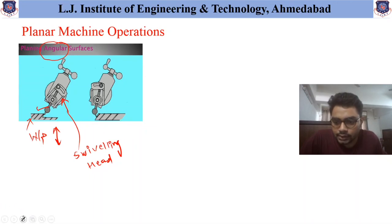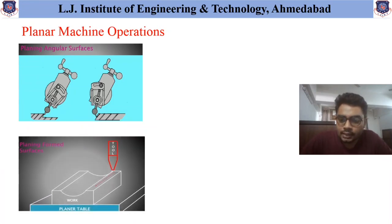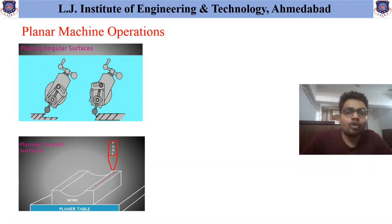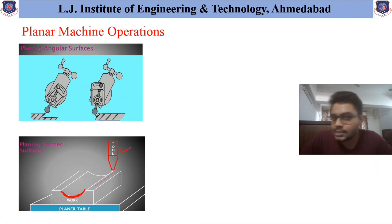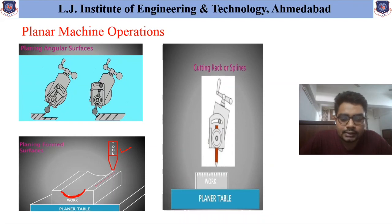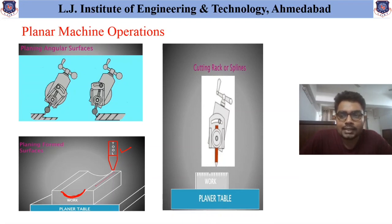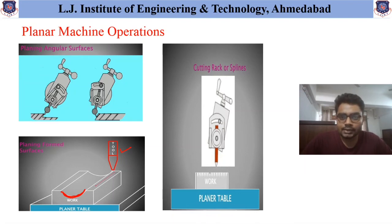Another machining operation that can be performed using the Planner Machine is planning of formed surfaces. To plan formed surfaces, the tool is given movement in the form that is required — if the required form is a particular shape, the tool is moved in that shape. The movement of the tool and workpiece is similar to previous cases. Splines can also be obtained using a cutting rack or spline operation. For exams, the three main important operations are: machining horizontal surfaces, machining vertical surfaces, and machining angular surfaces.